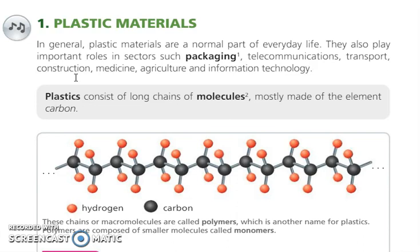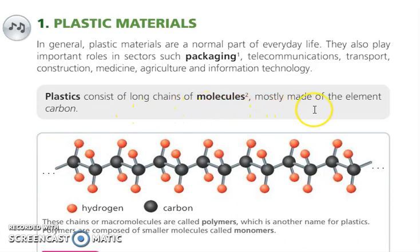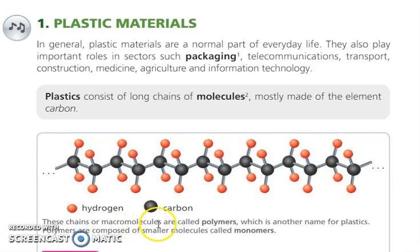What is a plastic? Plastics consist of long chains of molecules, mostly made of the elements carbon and hydrogen. This is a chain of molecules. These chains, or macromolecules, are called polymers. So this is another name for plastic.